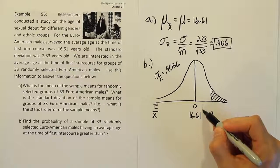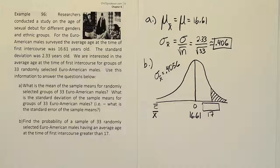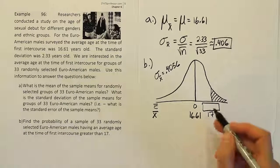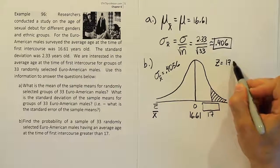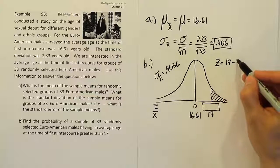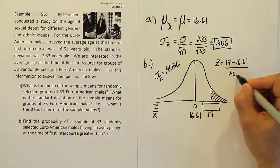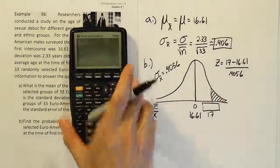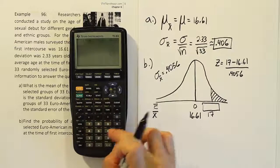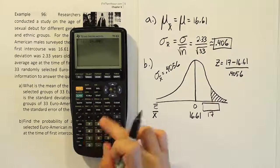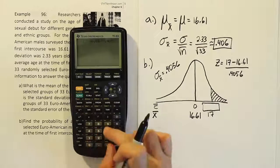So all that we do now is convert this into a Z-score, and then look that Z-score up, and the rest is pretty much routine. So let's go ahead and do that. Let's convert that 17 into a Z-score. I'm going to do it over here. So that'll be 17 minus the mean. The mean is 16.61 over the standard deviation, which is 0.4056. Let's put all that together and see what we get. So we'll have 17 minus 16.61, close it up and divide by 0.4056.